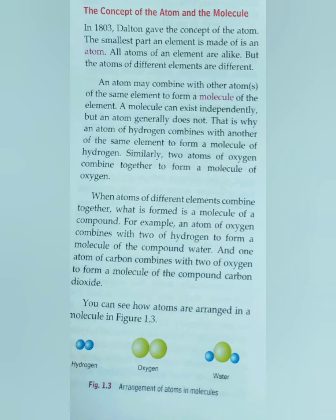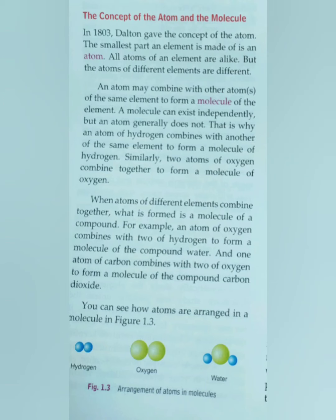In 1803, Dalton gave the concept of the atom. Dalton was the first to tell about the atom — he said that the smallest part of an element is made up of atoms. He also stated that atoms of an element are all alike, meaning the same, but atoms of different elements are different. He also gave a theory called the atomic theory.